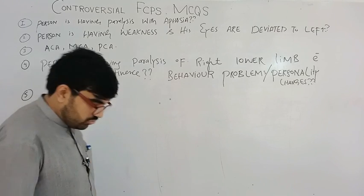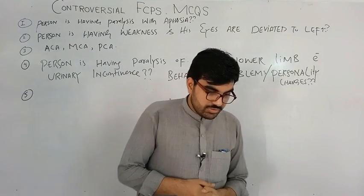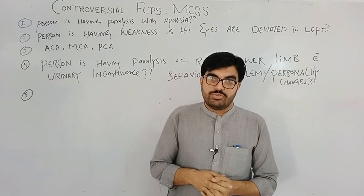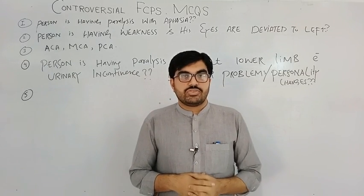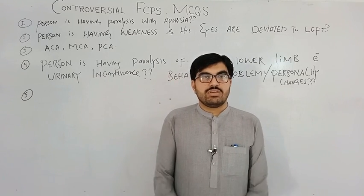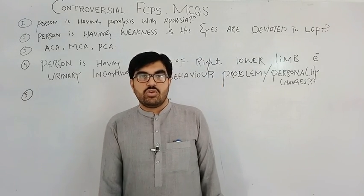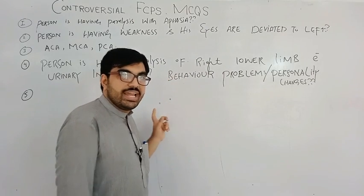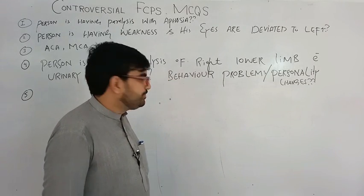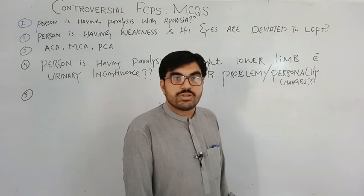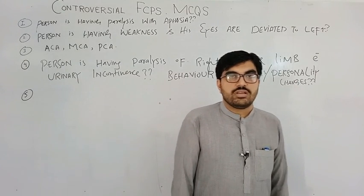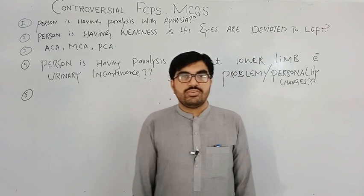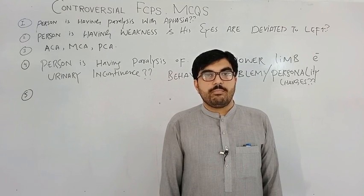We will first talk about cortical strokes — mainly the ACA stroke and the MCA stroke. In an ACA (anterior cerebral artery) stroke, the frontal lobe is involved. Behavior and personality are controlled by the frontal lobe, and the patient usually has urinary incontinence and paralysis in the lower limb more than the upper limb.